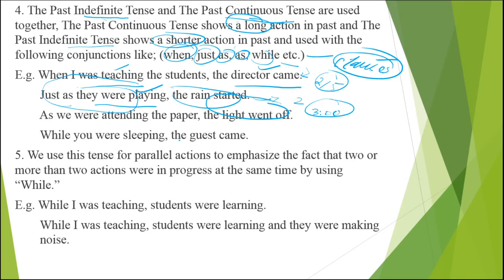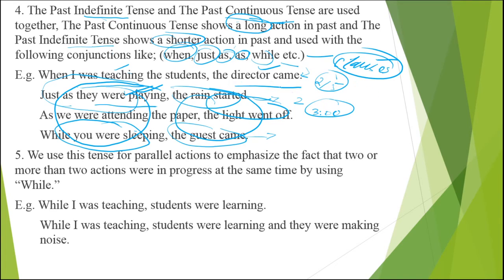'While you were sleeping, the guest came.' You were sleeping maybe two hours or ten hours before — the guest came. The coming of the guest, knocking at the door or phoning, is a short moment. So when comparing past continuous and past indefinite actions, keep in mind: past continuous actions will be longer than the past indefinite. You can also change the order — 'The rain started just as we were playing' or 'The director came when I was teaching the students.' You can shuffle them, and we will learn more in the clauses section.